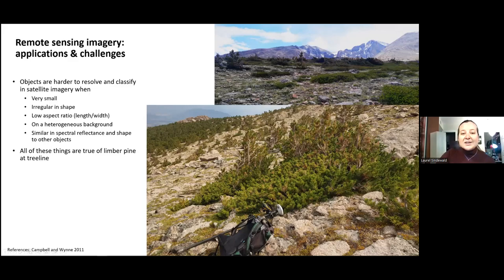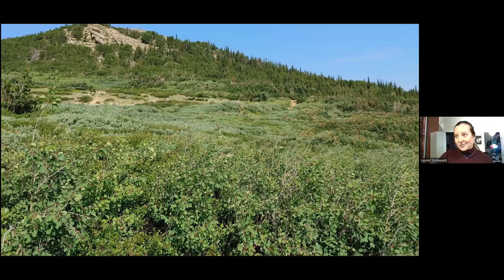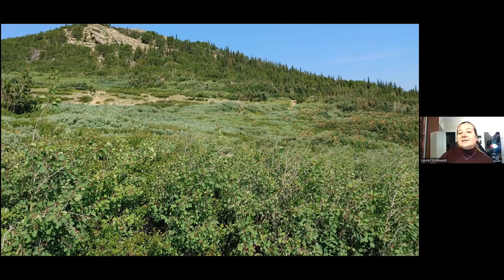Objects are harder to resolve and classify in satellite imagery when they are smaller, irregular in shape, with lower aspect ratio, on a heterogeneous background, and when they are similar in spectral reflectance and shape to other objects. All of these things are true of limber pine at treeline. For example you can see the limber pine interspersed with glandular birch, subalpine fir, and Engelmann spruce at the Long's Peak study site in the top image and in the bottom image you can see that most of the limber pine at treeline at the Battle Mountain site is very small, not much larger than one or two square meters in area. And in other treeline areas the problem is worse. For example at the Long's Peak study site looking at Jim's Grove and the Battle Mountain backcountry site you can see vegetation grows densely especially around Larkspur Creek. It's a dense mix of two species of willow that hybridize, glandular birch, aspen, subalpine fir, Engelmann spruce, and limber pine as a minor component. Occasionally you also find common juniper and shrubby cinquefoil. It's easy to see this is a difficult classification problem.